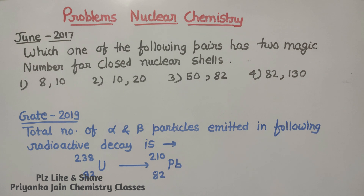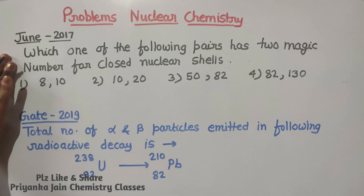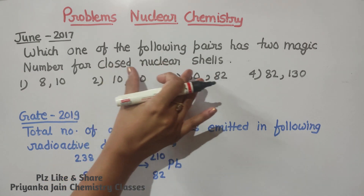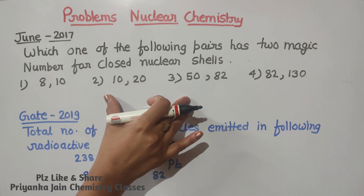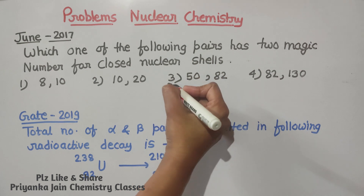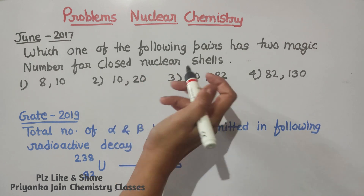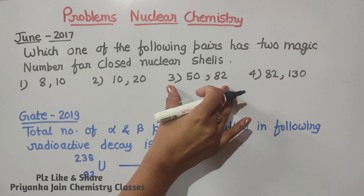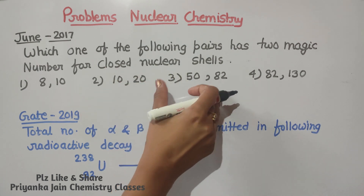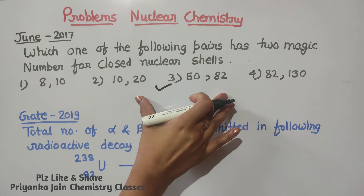This question is from CSIR-NET June 2017: which one of the following pairs has two magic numbers for closed nuclear shells? I have already made a video about magic numbers. Whenever the atomic number, number of neutrons, or number of protons is equal to 50, 82, or several other specific numbers, those are called magic numbers — the nucleus is highly stable. So the answer here is 50 and 82. A very simple question worth two marks.